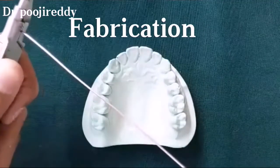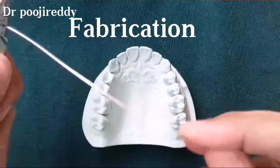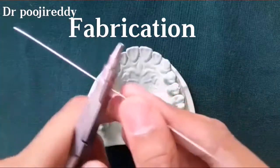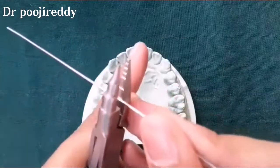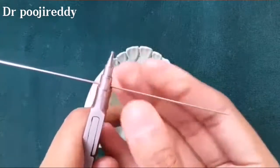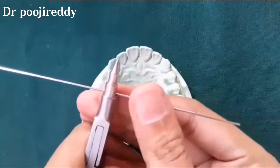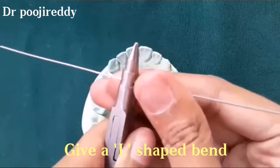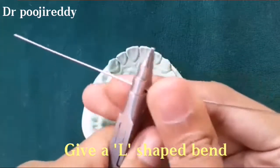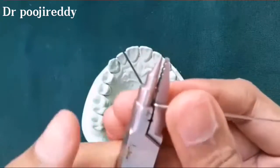Now coming to the first step of fabrication of an Adams clasp: that is straightening of wire. Usually 21 gauge stainless steel orthodontic wire is used for the fabrication of Adams clasp. After completion of straightening the wire, give an L-shaped bend as you are seeing right now.